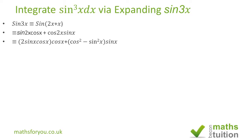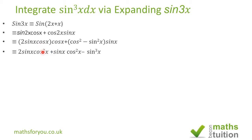If we then expand the brackets for both terms, we end up with 2 sine x cos squared x — because cos x times cos x gives us cos squared x — plus sine x cos squared x. And then sine x times sin squared x gives us sine cubed x.